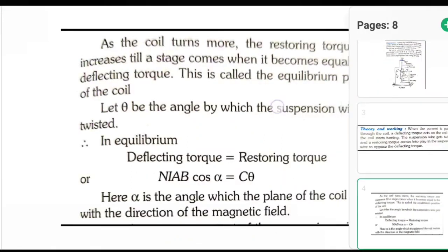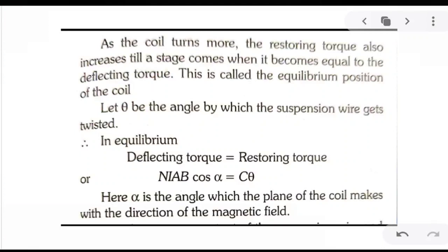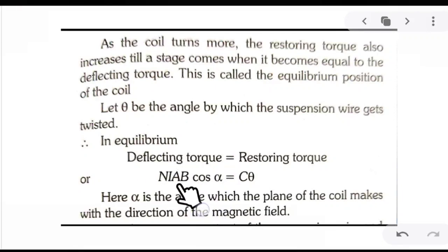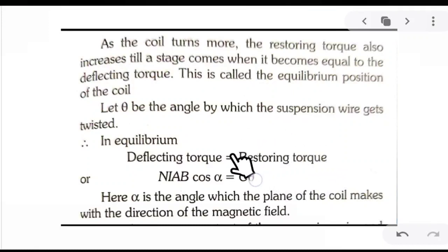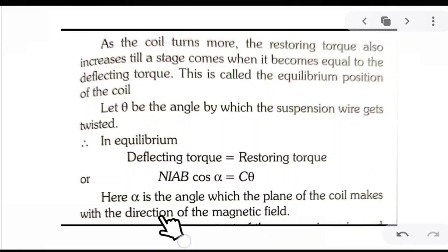At equilibrium, where the deflecting torque and restoring torque become equal, we record the reading — that is the deflection in the galvanometer. The deflecting torque is given by τ = NiAB cos α, using the formula derived for torque on a current coil in a magnetic field. The restoring torque produced in the suspension wire and spring is given by τ = Cθ, where θ is the twist in the coil and C is called the couple per unit twist.